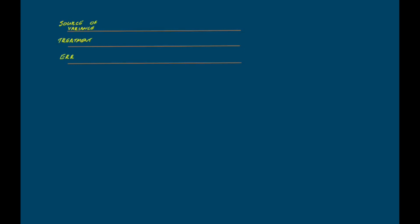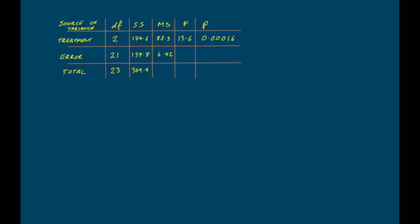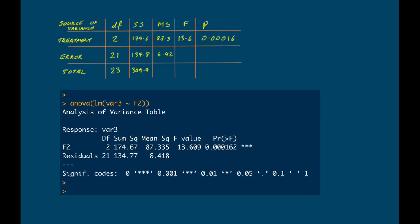Most of the time we don't calculate an ANOVA table by hand — we ask a computer. When we put these data into R and ask for an ANOVA, it produces a table that's slightly different from ours: R doesn't include a row for the total sum of squares, and it calls the error sum of squares the residual sum of squares. It also labels the treatment row by the factor name. But the numbers are all the same, give or take rounding errors.